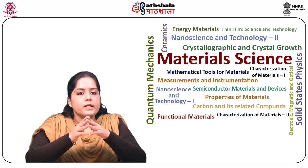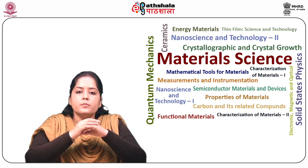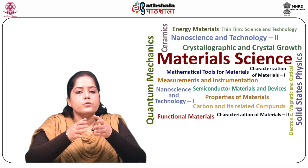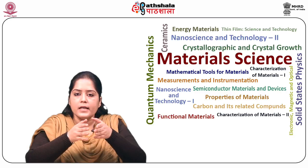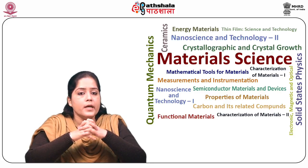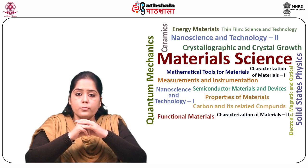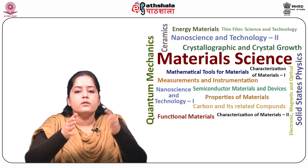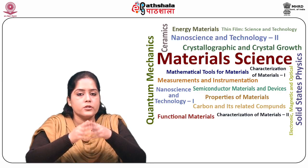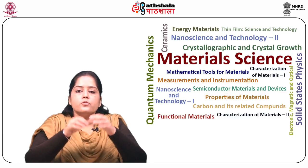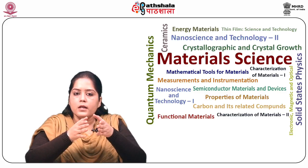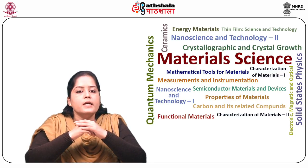The first scanning electron microscope debuted in 1938 with the first commercial instrument in 1965. Its late development was due to the electronics involved in scanning the beam of electrons across the sample. The transmission electron microscope was the first type of electron microscope to be developed, patterned exactly on the light transmission microscope, except that a focused beam of electrons is used instead of light to see through the specimen. It was developed by Max Knoll and Ernst Ruska in Germany in 1931.